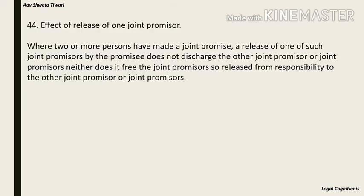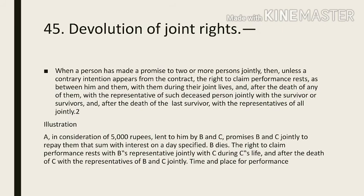Section 44: effect of release of one joint promisor. Where two or more persons have made a joint promise, a release of one such joint promisor by a promisee does not discharge the other joint promisors, neither does it free the released joint promisor from responsibility to the other joint promisors. Section 45: devolution of joint rights. When a person has made a promise to two or more persons jointly, the right to claim performance rests, during their joint lives, with them jointly; after the death of any one, with his representative jointly with the survivors; and after the death of the last survivor, with the representatives of all jointly.